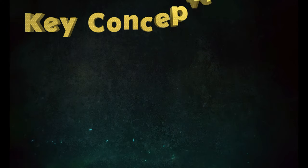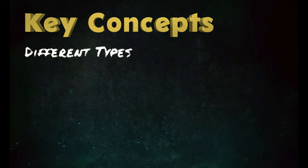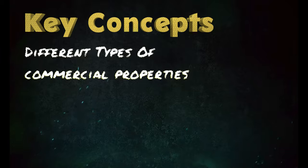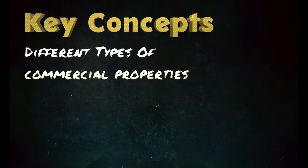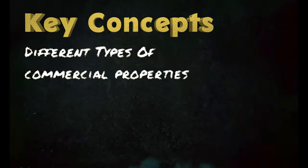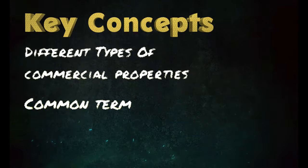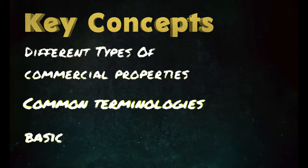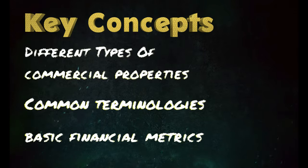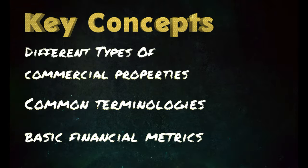Some key concepts to learn include the different types of commercial properties. We're going to talk about some common terminology like letter of intent, earnest money deposit, due diligence, what an estoppel letter is, and the basic financial metrics like NOI and cap rate, which we'll cover in a step below.